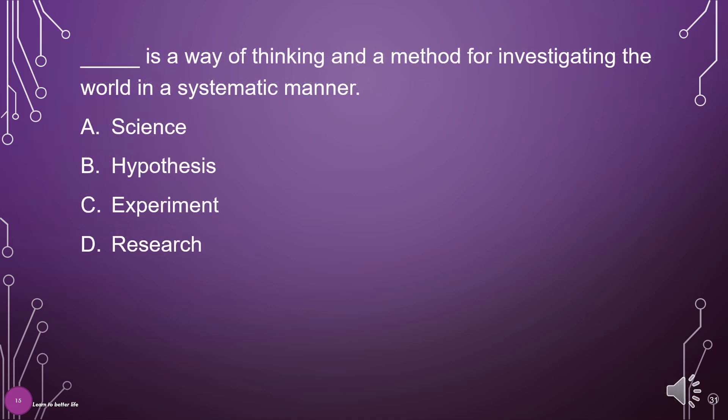What is a way of thinking and a method for investigating the world in a systematic manner? A. Science, B. Hypothesis, C. Experiment, D. Research. The answer is A: Science.